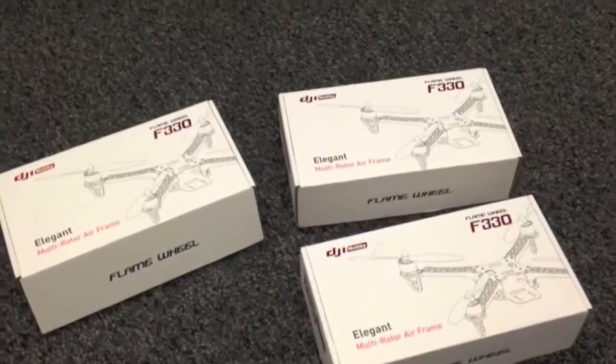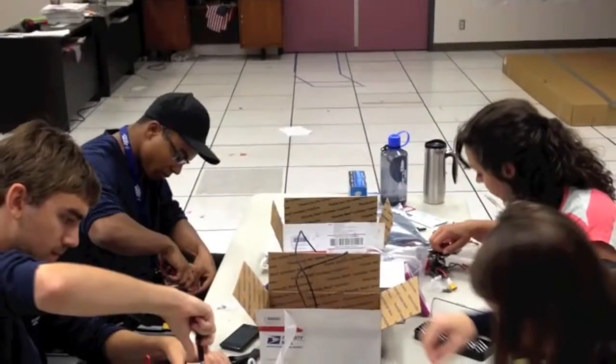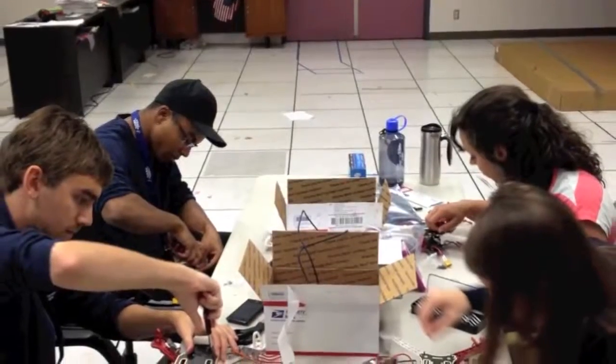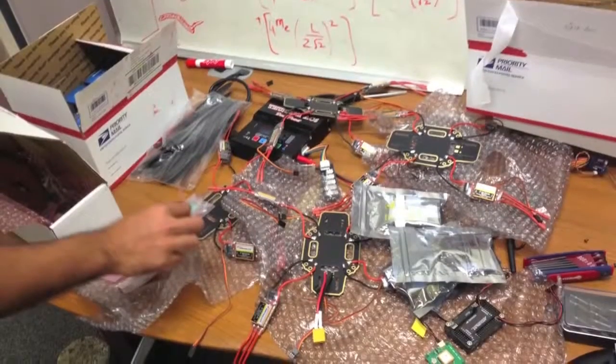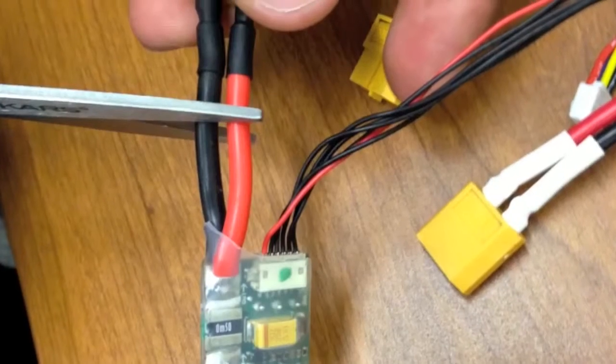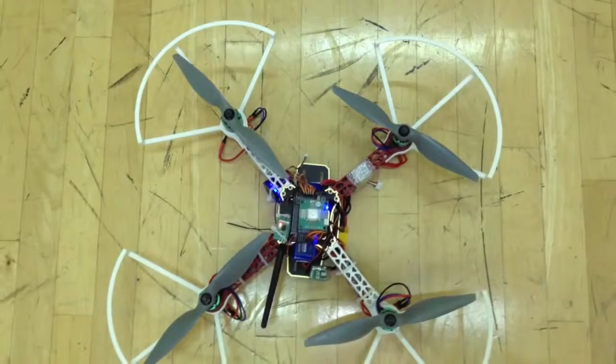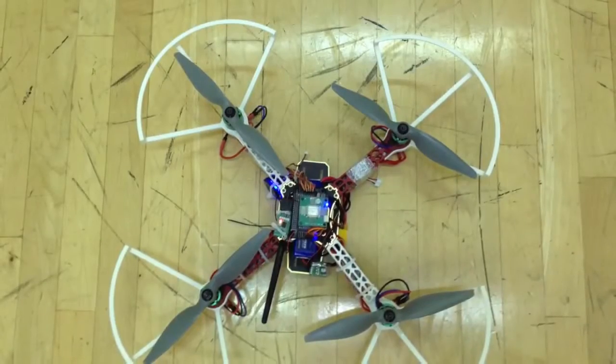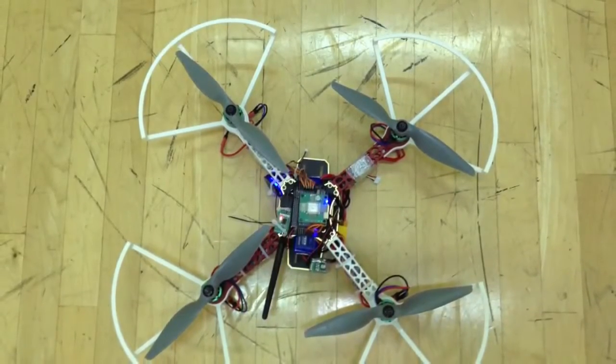We began by constructing our quadcopter vehicles after they arrived in the mail. Alan, Matt, Carly, Robin, and Andrew C. met at Building 243 to construct the quadcopters on a Friday afternoon. After all four quadcopters were assembled, we finally turned them on using remote control to hear the engines roar for the first time.